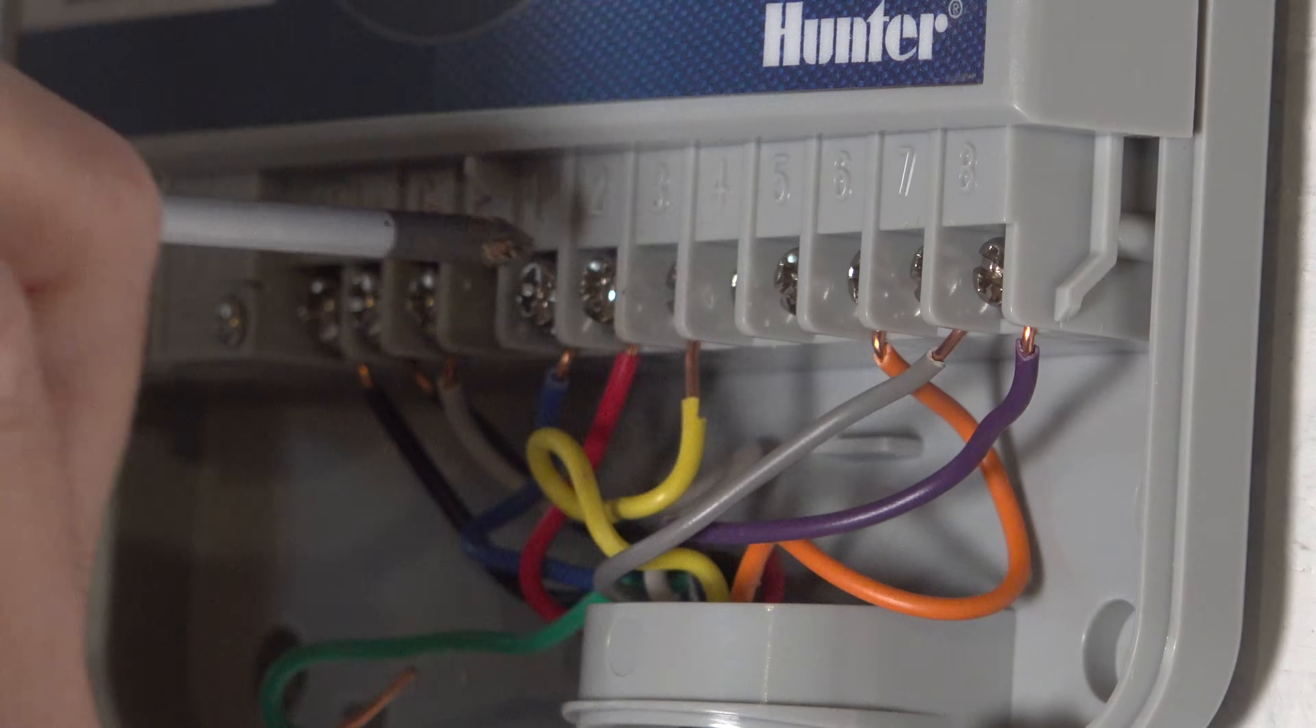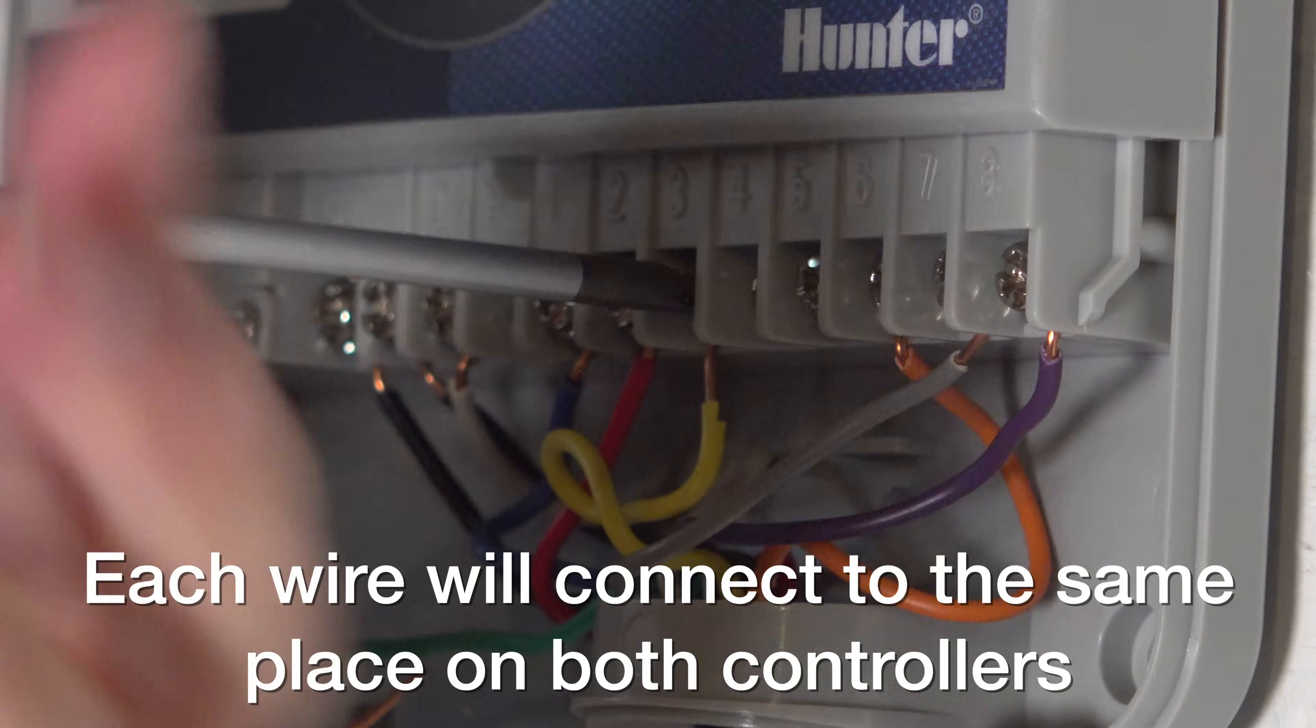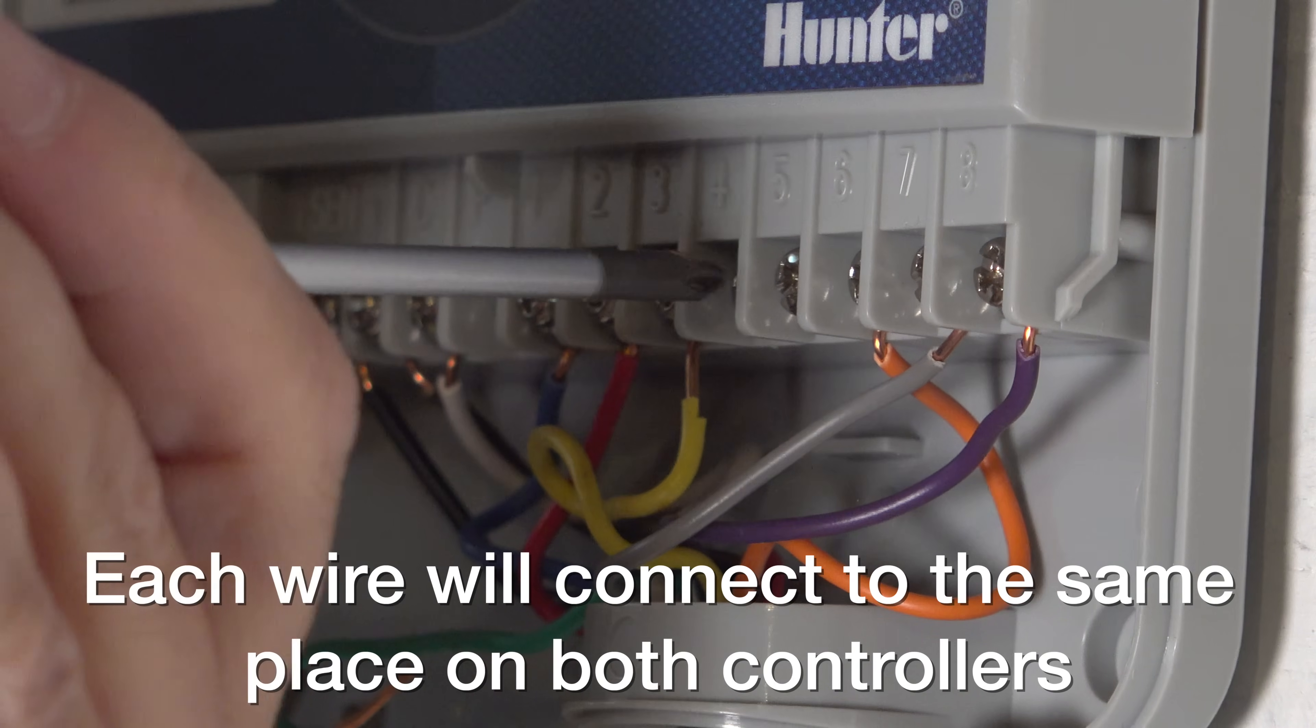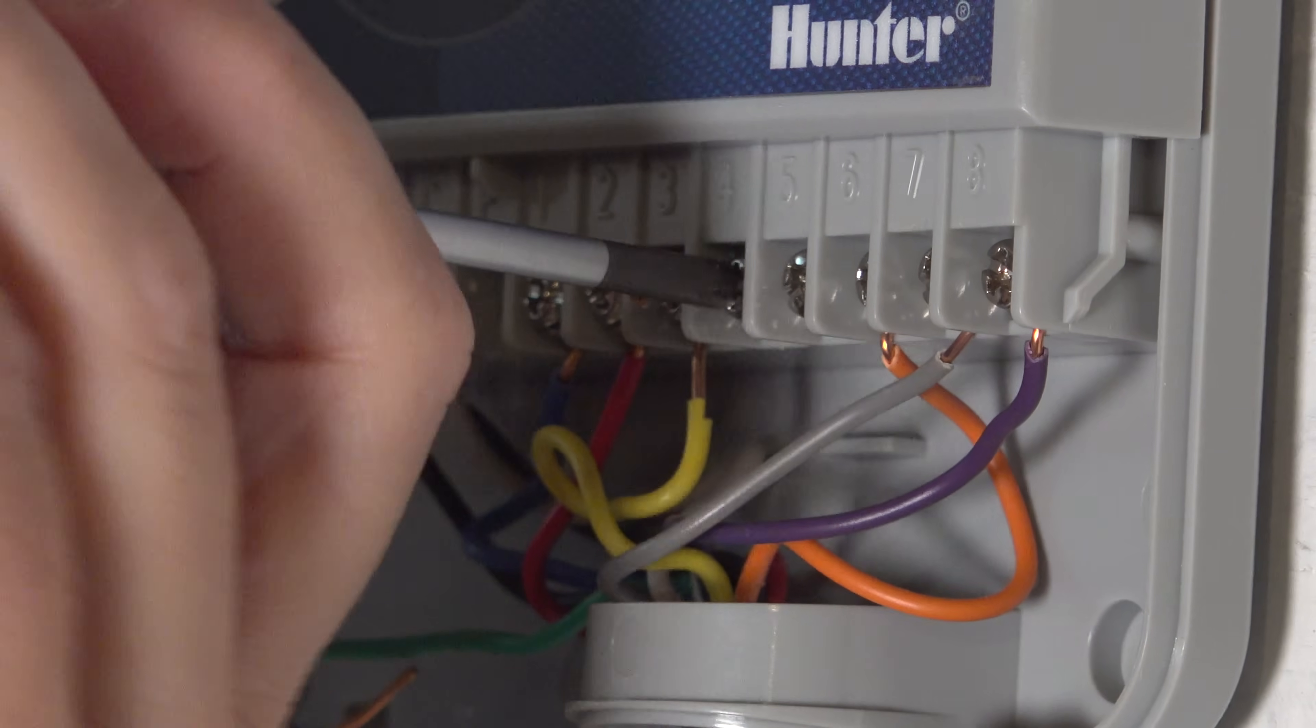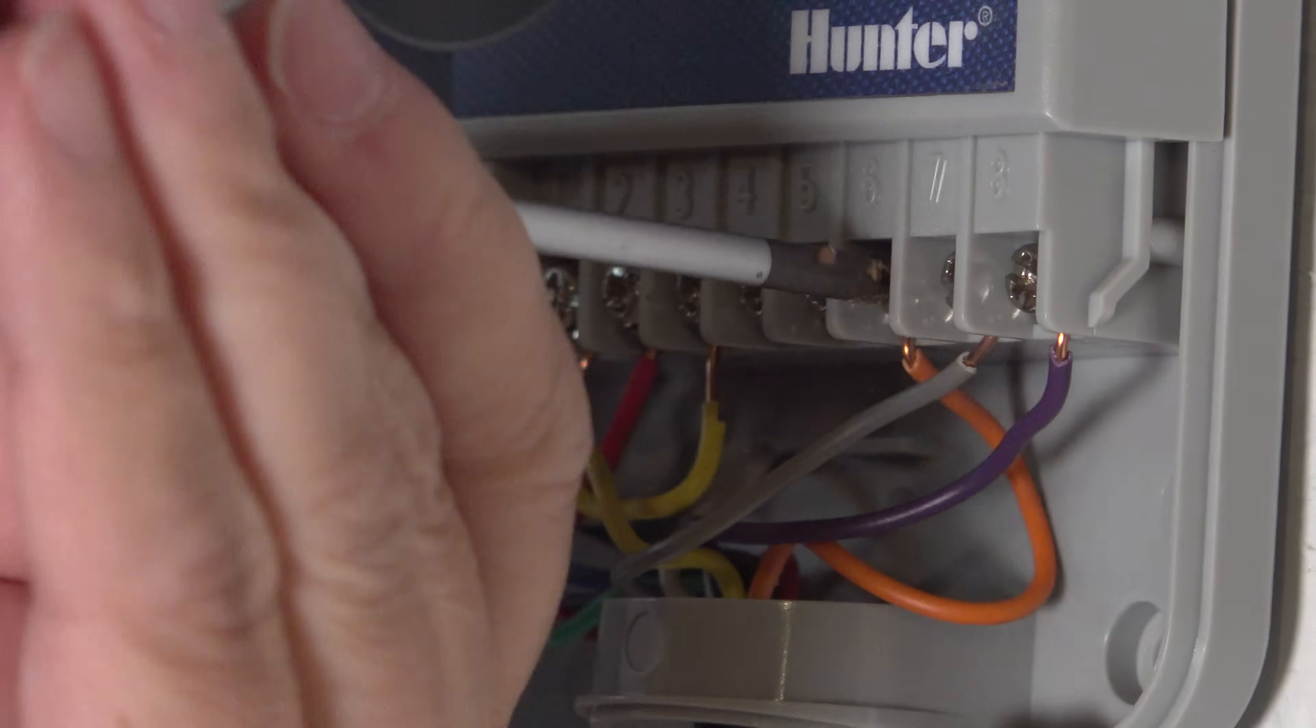You're going to reconnect every one of these wires to the exact same spot on your Rachio. They designed the Rachio to match up with the existing sprinkler system so that it'd be really easy to install.